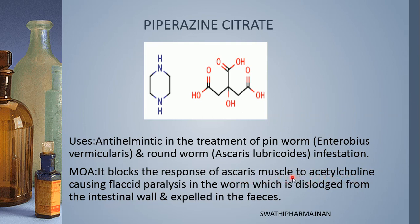When this muscle responds to acetylcholine, contraction and relaxation of the parasite takes place. But when the drug is incorporated into the patient, it causes flaccid paralysis in the parasitic worm. The worm is then discharged from the intestinal wall and expelled in the fecal matter because of loss of contraction and relaxation — it becomes completely paralysed.